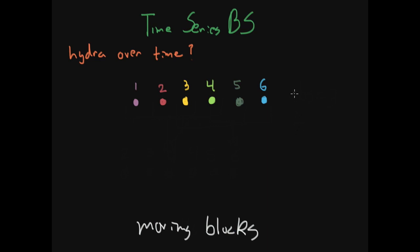The first step that you need to do in moving blocks is you need to set your block size. So for example, we can go ahead and set block size equal to three. This will mean that you need to divide your initial time series data into blocks of size three.